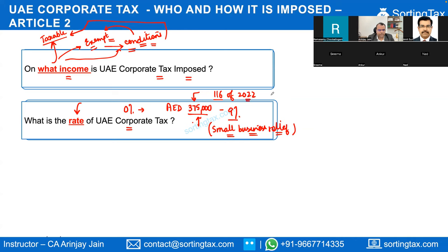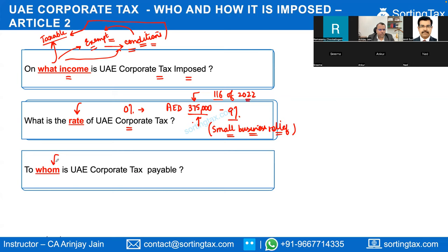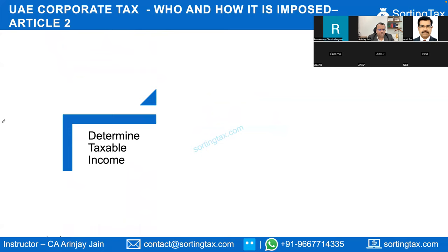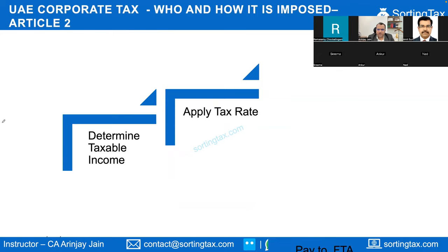The third key element is identifying which authority UAE corporate tax is payable to. So the three steps are: first, determine the taxable income; second, apply the relevant tax rate; and third, make payment to the government.